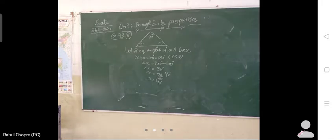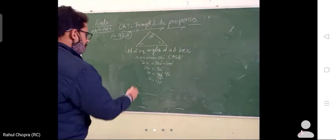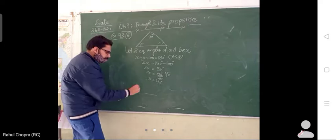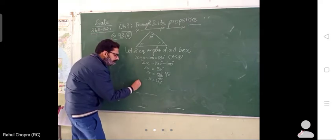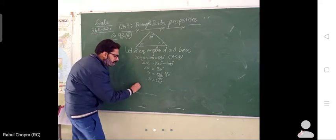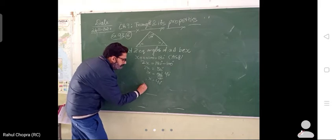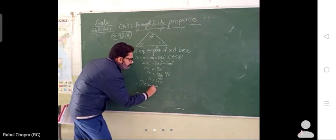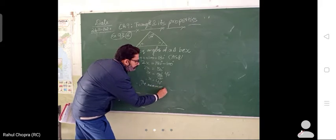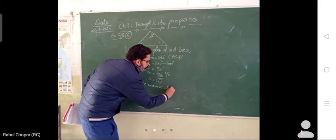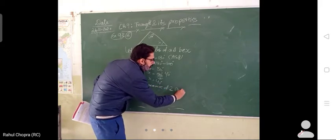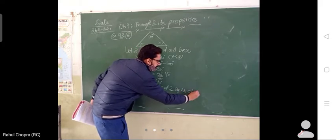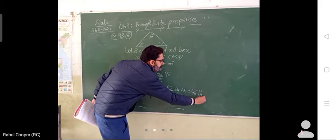Are you understanding? Am I visible and audible to you? Therefore, the measure of the two equal angles is 40 degrees each. Just go through it.